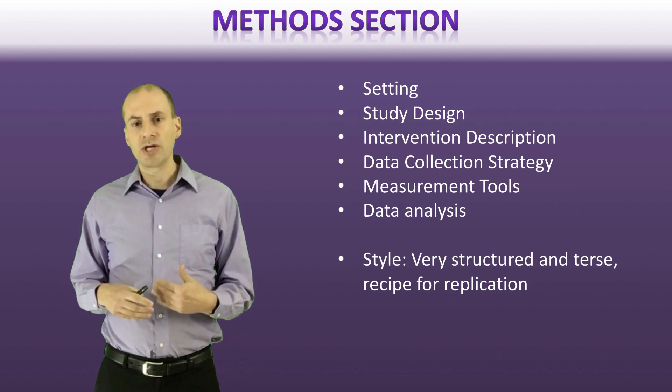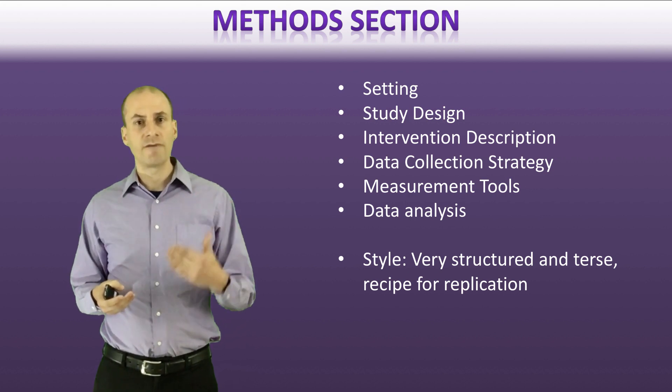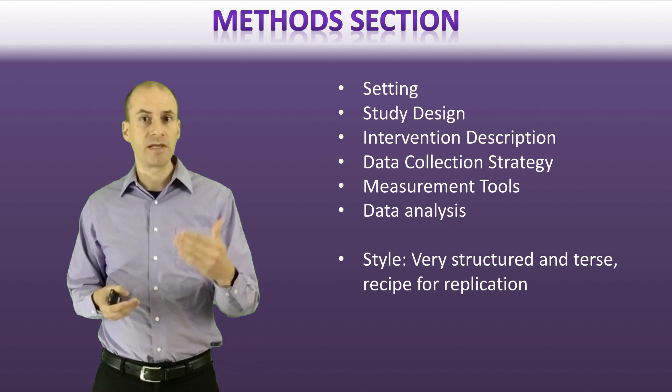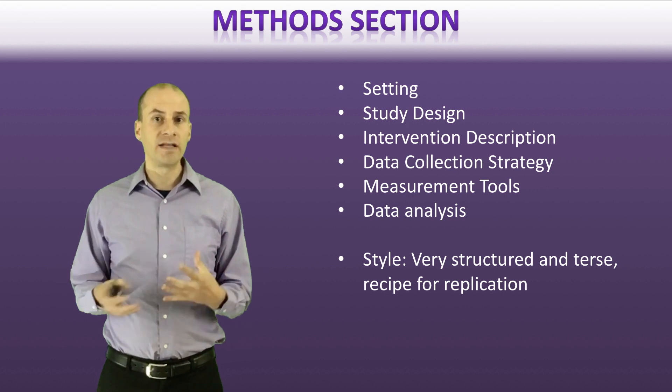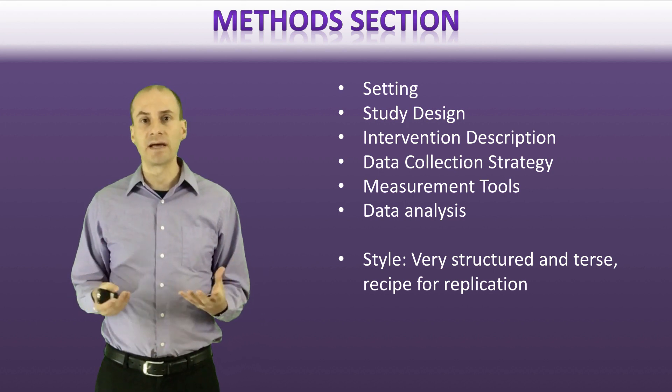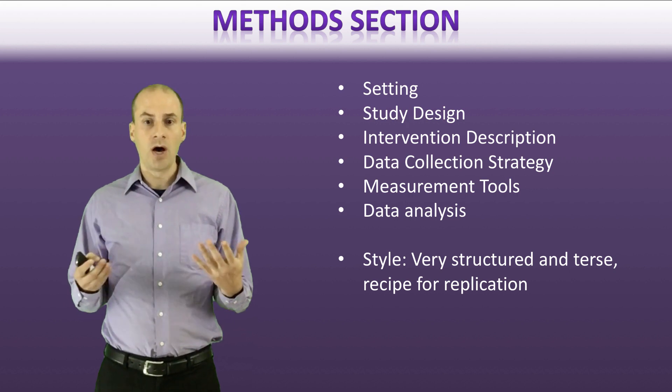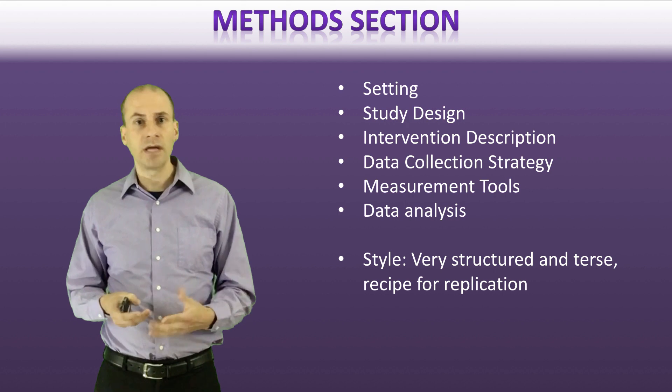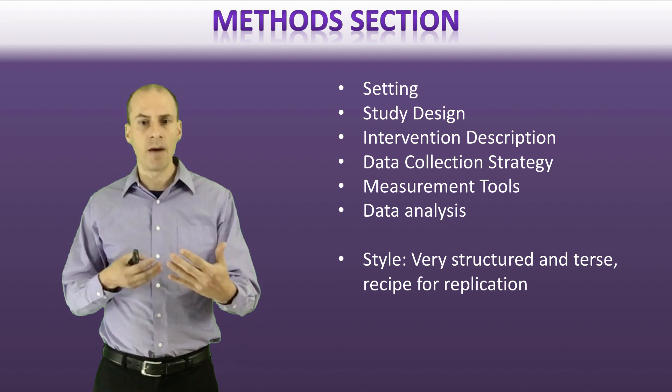All right. So after the introduction, you'll typically find the method section. So the method section tends to follow a fairly structured approach. And the order of the bullets here is typically the order that you'll see in the methods section. So first off, you'll find in there some information about the setting. So the reason that this is important is to understand where the study is being done and who's engaged in this. So setting and sample will typically be up there at the beginning, sample being the people who are participants in the study or where that information is coming from.